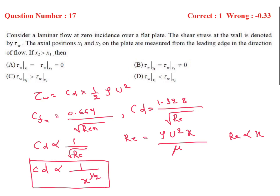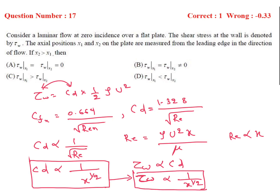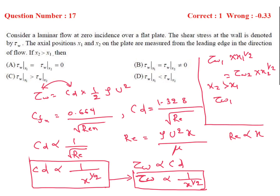Since τ_w ∝ x^(−1/2), we can write τ_w1 × x1^(1/2) = τ_w2 × x2^(1/2). Given that x2 is greater than x1, it follows that τ_w2 should be less than τ_w1 — the wall shear stress decreases along the plate in the flow direction.